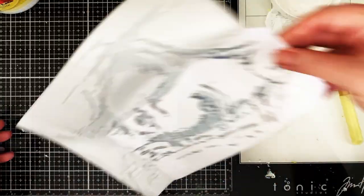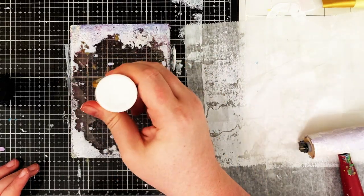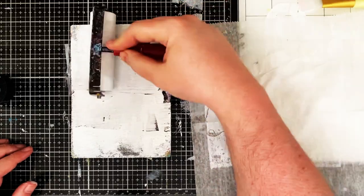So while that's drying, I'm going to start working on the background of my tag and I pulled out my trusty old gel plate. I'm just laying down some white paint.